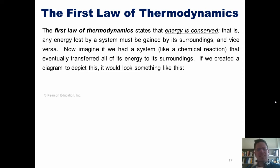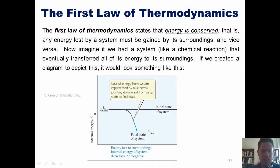That is, any energy lost by a system has to be gained by its surroundings and vice versa. Now, I want you to imagine that we had a system, like a chemical reaction, that eventually transferred all of its energy to its surroundings. If we created a diagram to depict this, it would look something like this. The system has some level of energy. Gradually, it transfers that energy to its surroundings. As it transfers the energy to the surroundings, the energy level of the system drops until it finally gets to a much lower final energy state.